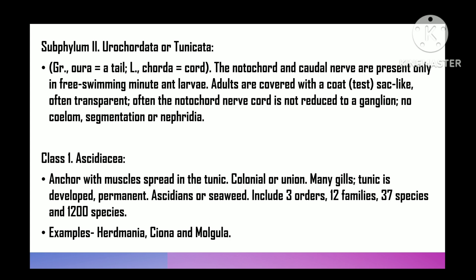Class 1 of Urochordata is Ascidiacea — sessile tunicates with scattered muscles in tunic, solitary, colonial, or compound. Gill slits numerous, tunic well developed. Also called sea squirts. Ascidiacea includes three orders, 12 families, 37 genera, and 1200 species.